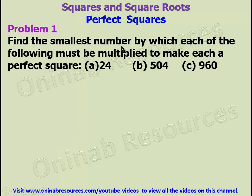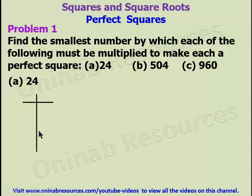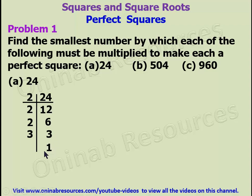Problem 1: Find the smallest number by which each of the following must be multiplied to make each a perfect square. We have 24, 504, and 960. Starting with part a, in a tabular form, we are going to express the number as a product of prime factors. So we have 24 here. 2 goes into 24 to give 12; 12 divided by 2 gives 6; 6 divided by 2 gives 3; and 3 divided by 3 gives 1.